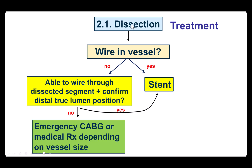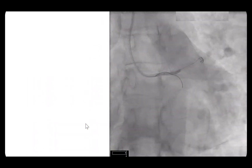How do we approach dissection, which again seems to be the most likely cause for occluding this vessel? If you have a wire, it's simple — you just put in a stent. But if you don't, then you need to wire the vessel, confirm you're in the true lumen, and then try to treat it. If this fails, then the option is to do emergency coronary bypass, or if it's a small vessel, just let the vessel infarct.